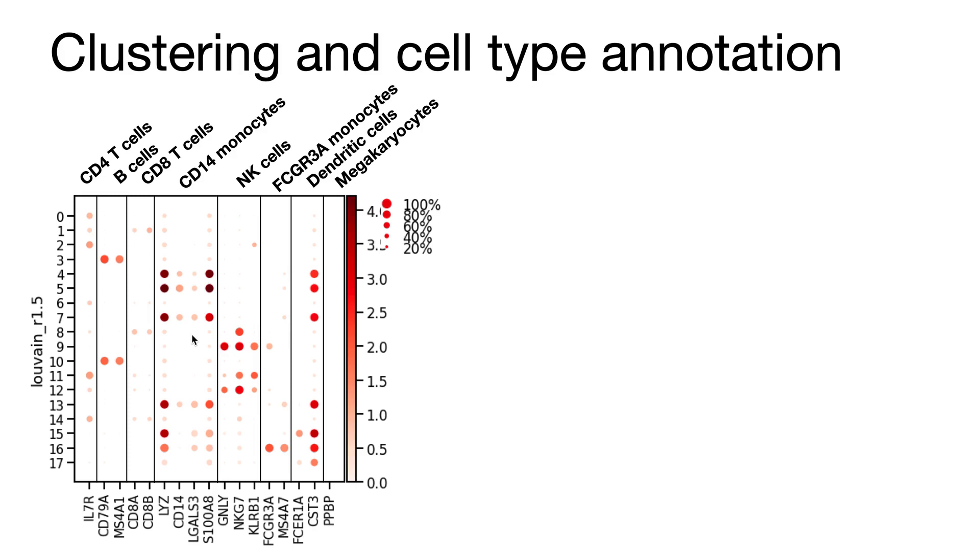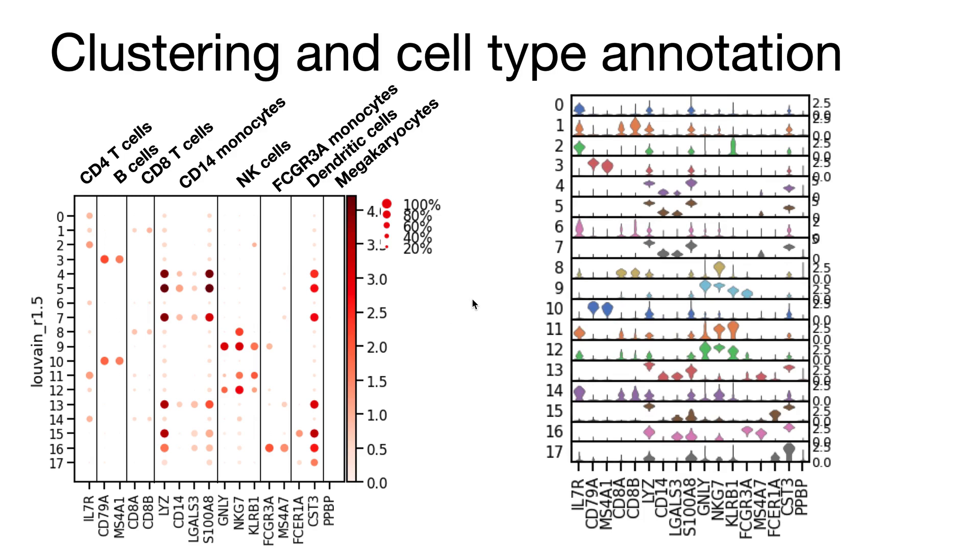When we want to look at not just the expression level and how many cells express it, we can also look at violin plots and then we get an intuition how the marker is distributed. During the tutorial in the first session we will also look at other ways to visualize cluster information and gene expression such as heat maps and matrix plots. Cell type annotation is still something that you can only do manually. However there are a couple of tools that help you to assign cluster names and in ScanPy we don't have them implemented.